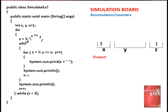Another looping statement is encountered. This time it is the while loop. The while statement validates a Boolean expression: is x greater than or equal to 1? The value of x at this point is 3, so the Boolean expression is true. The program implements the block statements within the while statement. Within the while block, there is another looping statement — the for loop.